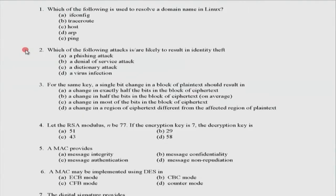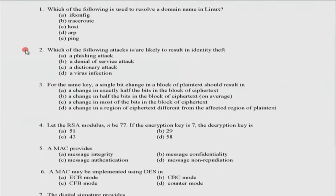Question number 3: for the same key, a single bit change in a block of plain text — you use the same key, same plain text, and just change any one bit. As you could have tested in the lab on the first day, the answer is B: on average about half the bits get changed in the resulting ciphertext — only on average, not always and not exactly.